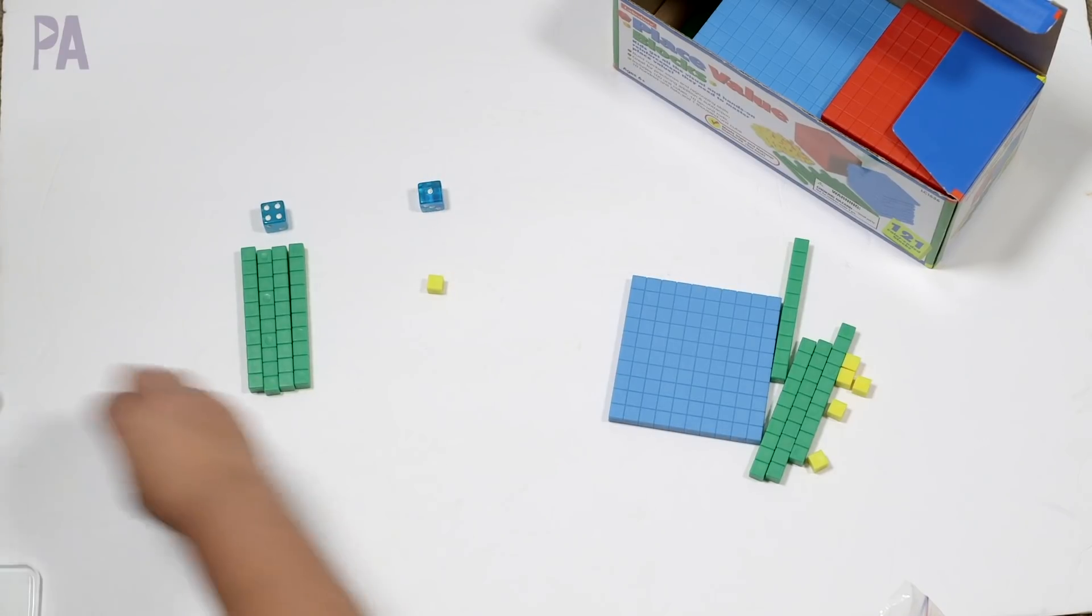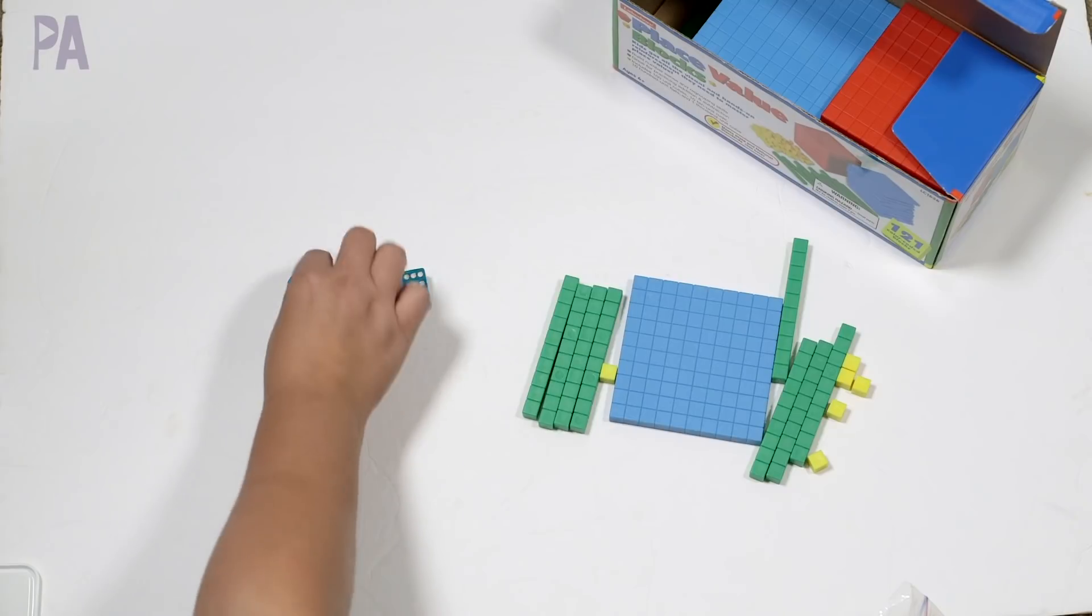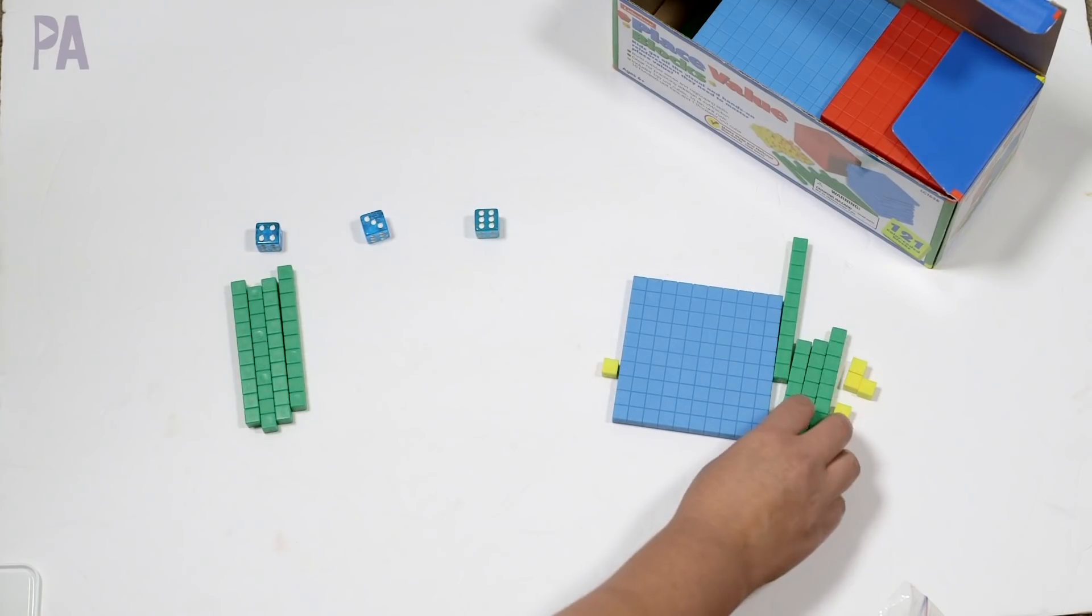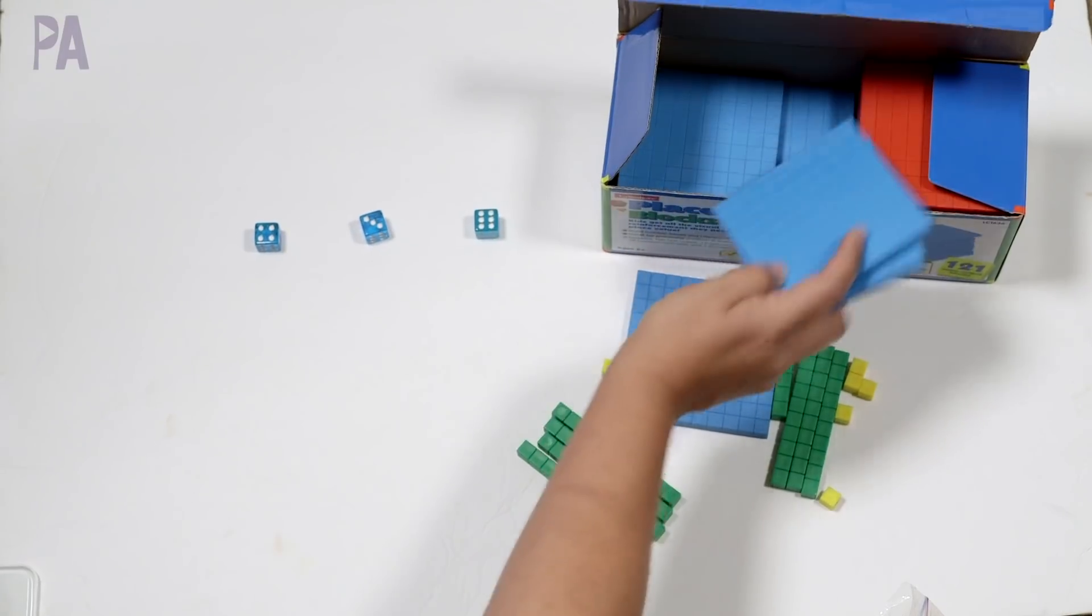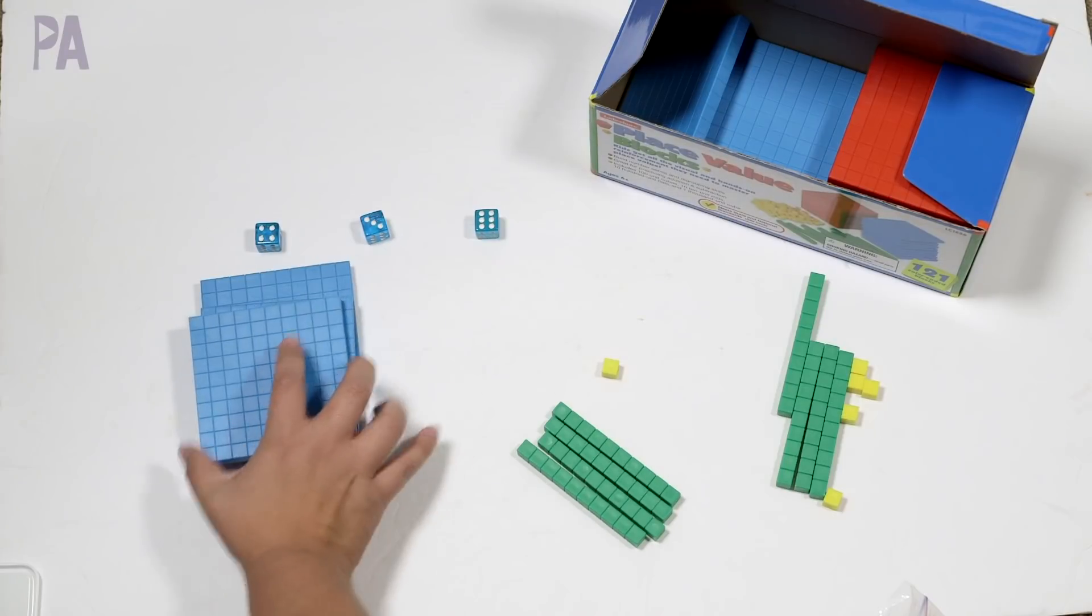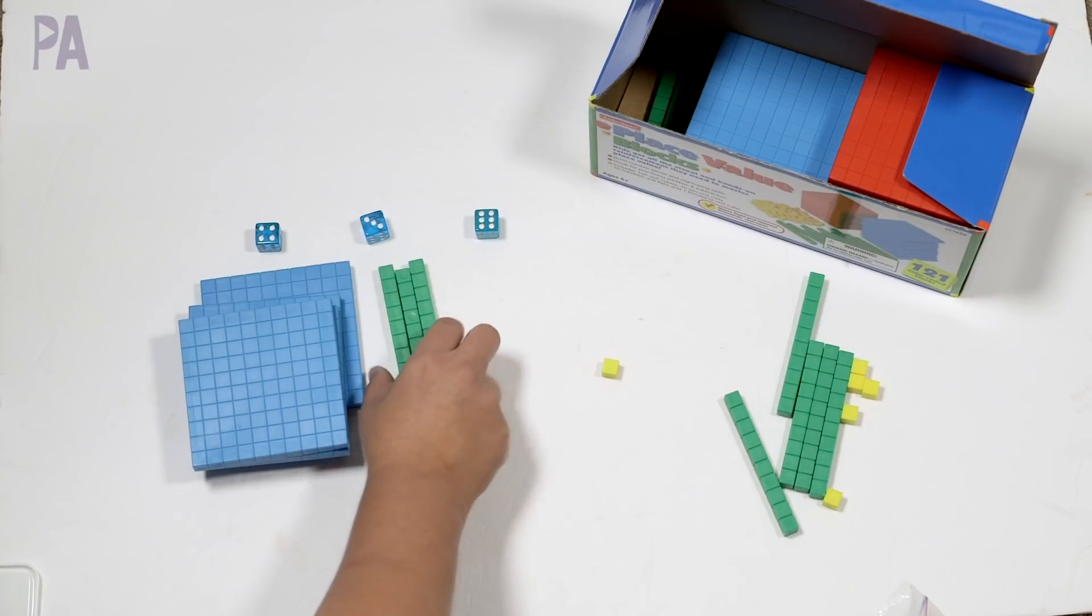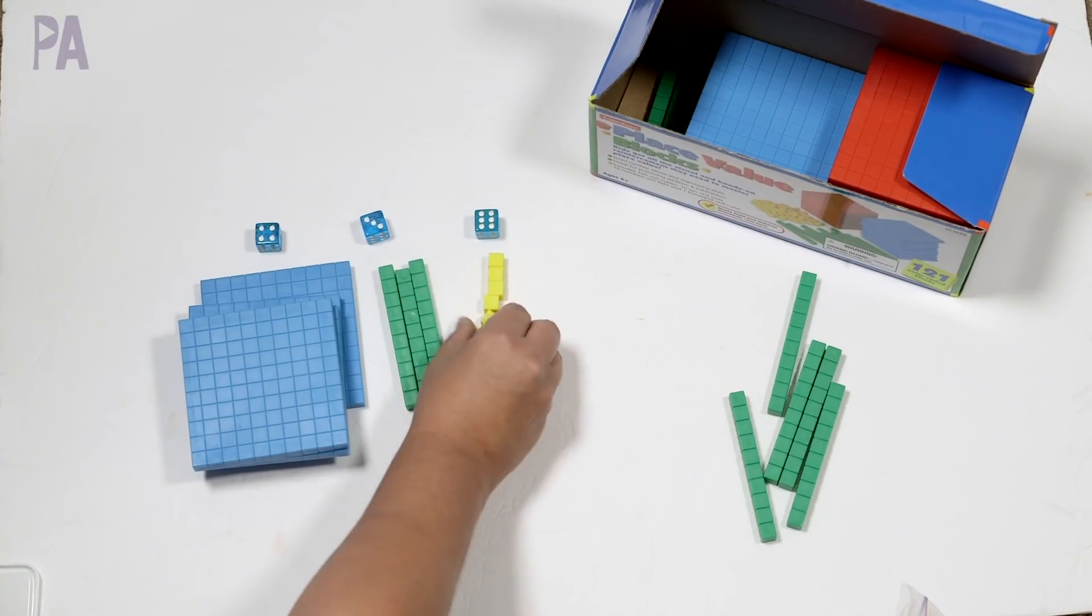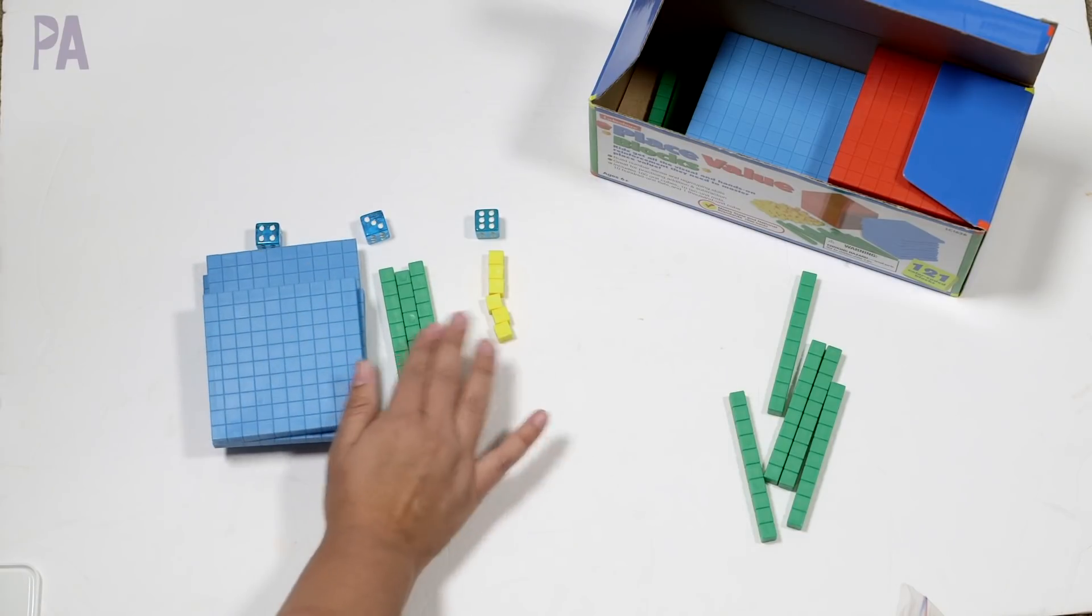You can add in your third die if you want to, or even go higher if you want to go higher. So four, oops, 400. Look at me. I promise. I know how to do this. One, two, three, four hundreds, three tens, six ones. This number is 436.